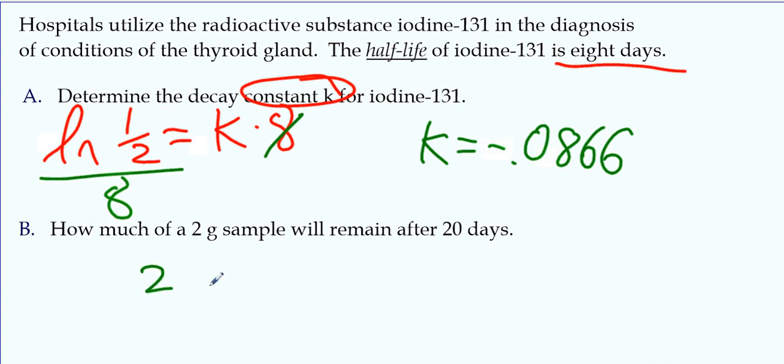Start with two grams. How much will be left after 20 days? So the initial amount's two. We're trying to find the final amount. N. E to the kt. And t is 20 days. So E to the 20 times k.